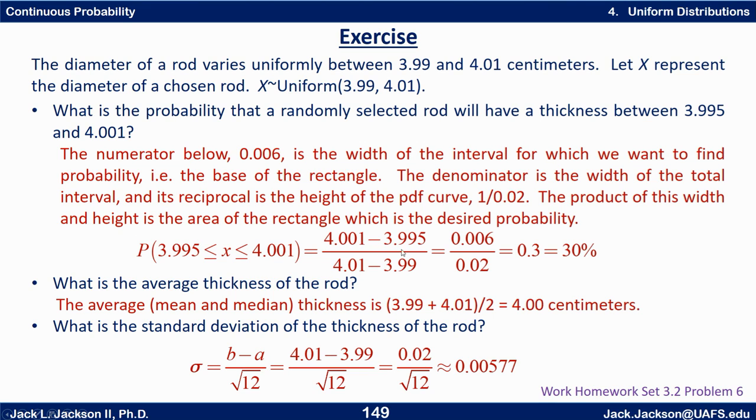So the numerator here is the width of the interval. So that's the 4.001 minus 3.995 which is 0.006. The width of the total interval is 0.02. So 1 over 0.02 is the height of it. Let's see that's 0.02. So 1 over 0.02 is 50. So you could replace that by 50 times that. And that turns out to be 0.3 or 30 percent.